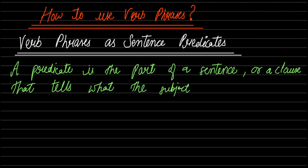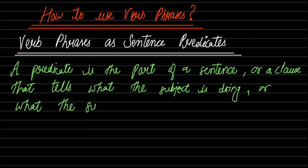The predicate tells what the subject is doing and what the subject is. Take the example of this predicate first, and then move on.